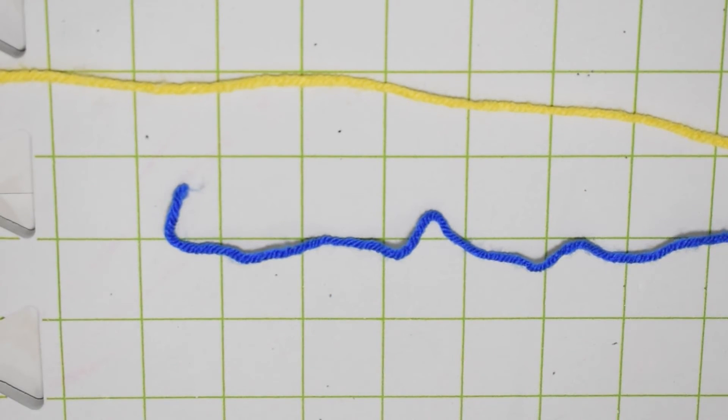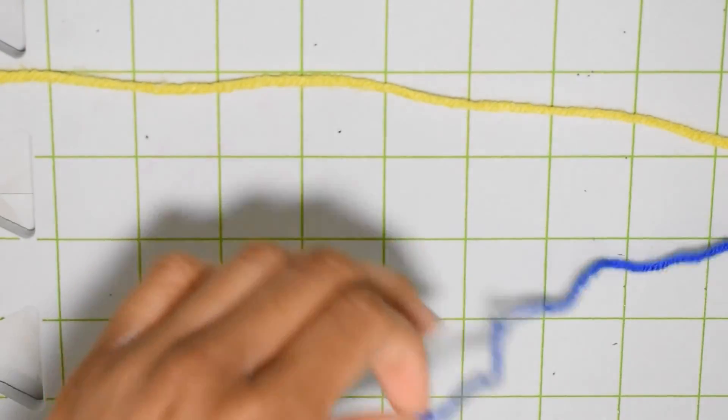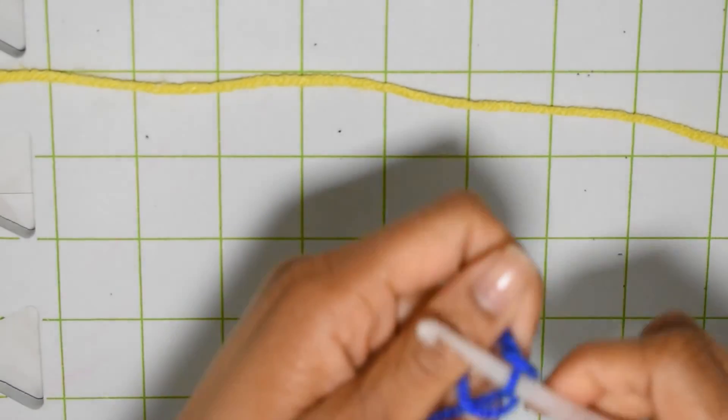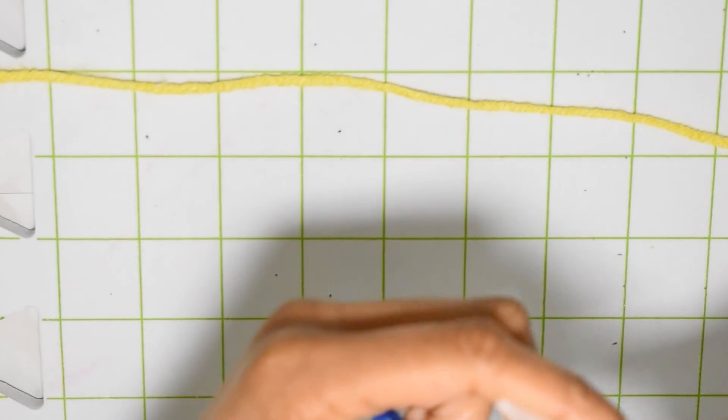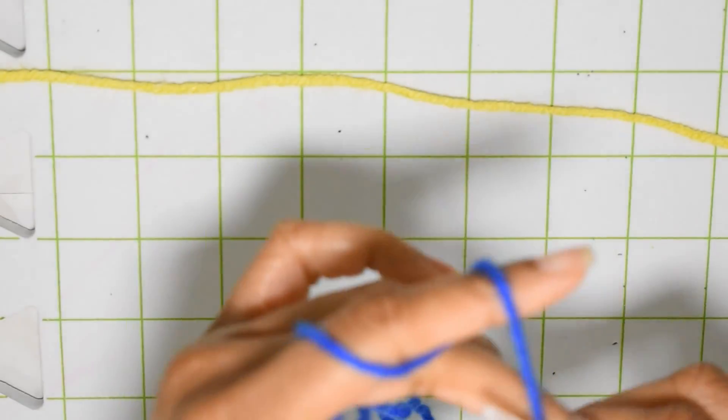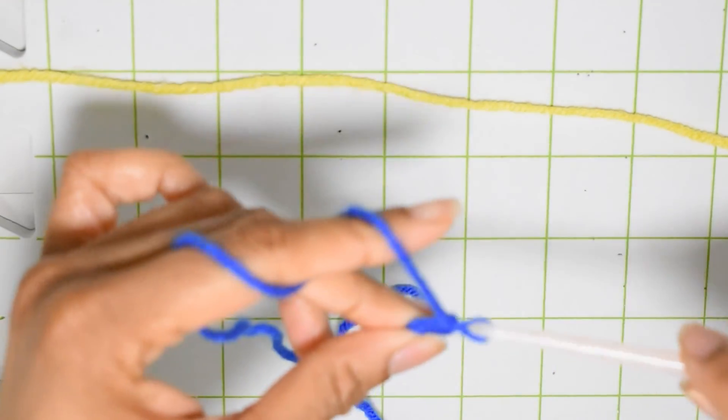Okay so this stitch is a really simple stitch and it looks great whether you work it in one singular color or whether you work it in multiple colors. For today's tutorial I will be working in multiple colors, more specifically two colors. So I'm gonna grab my darker color first and I'm going to start off with a slipknot.